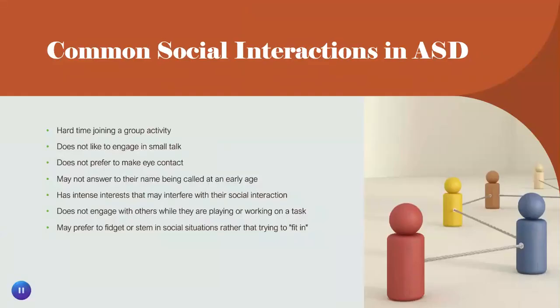Common social interactions in ASD — these are some things you're going to see often when looking at social interactions in autism. Often they will have a hard time joining a group activity. For example, there might be a group of kids playing a soccer game and the autistic child knows how to play soccer, but they don't know how to go and engage and ask if they can join. So they might just stand there staring, watching the soccer game, wishing they could play but not knowing how to join.